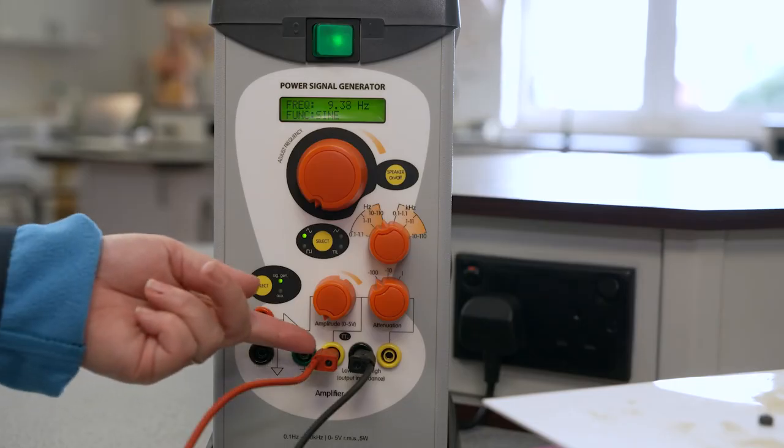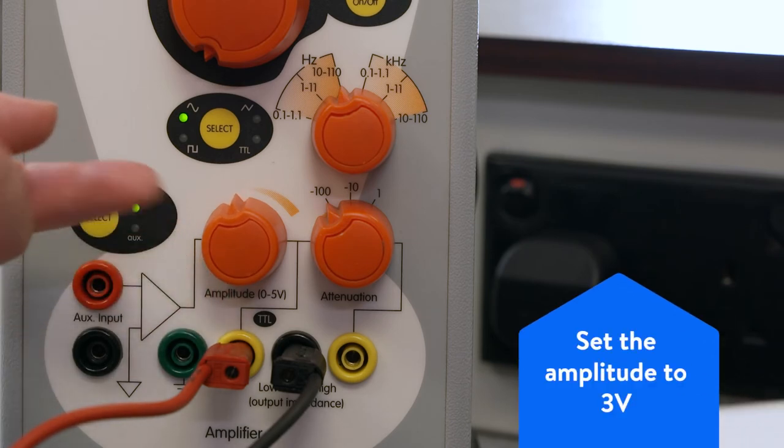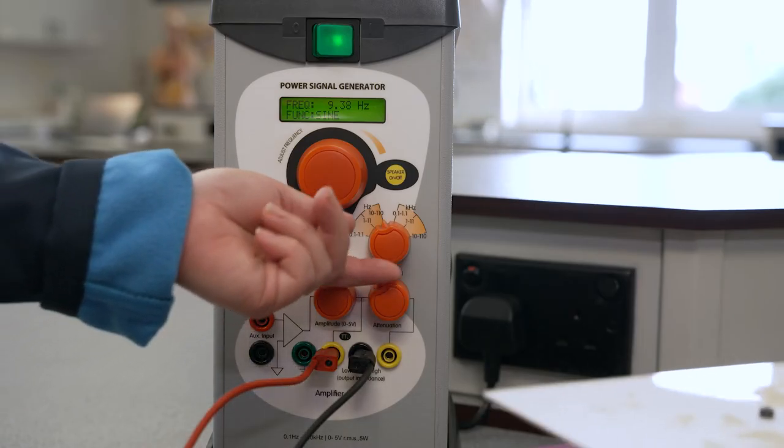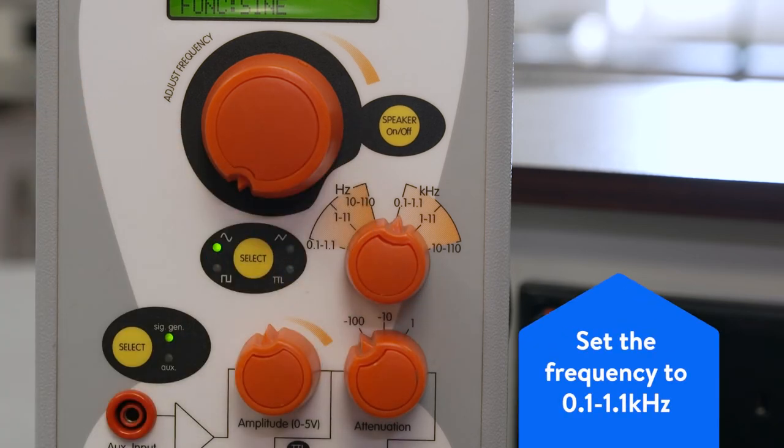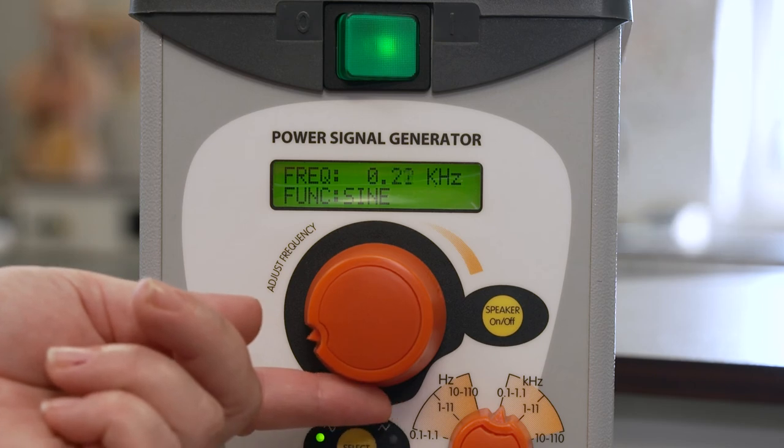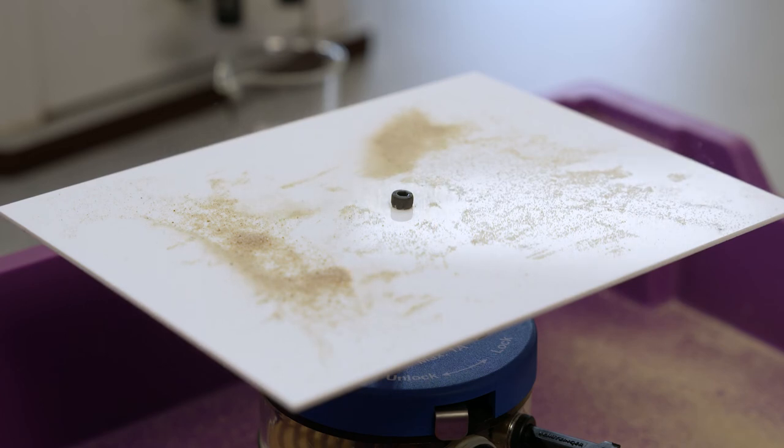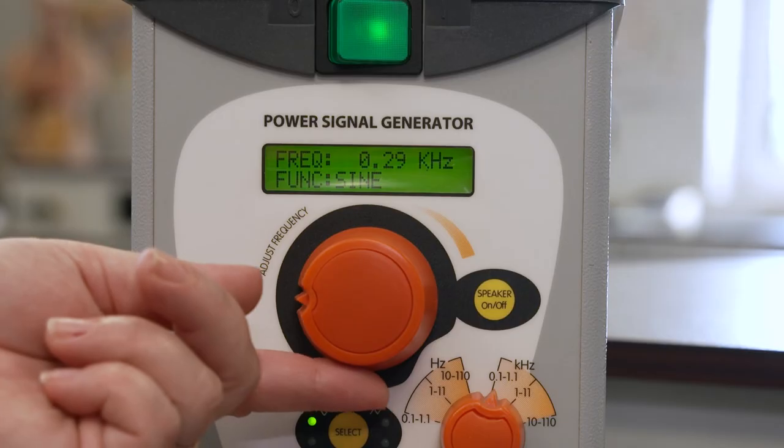Adjust the amplitude to approximately three volts which is just over halfway. Set the frequency selector to 0.1 to 1.1 kilohertz. Slowly increase the large frequency dial through the range. At several frequencies the plate can be heard to resonate. The sand will move until it reaches nodal lines.